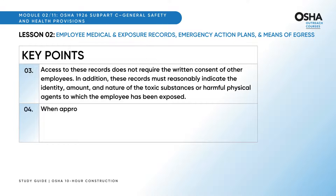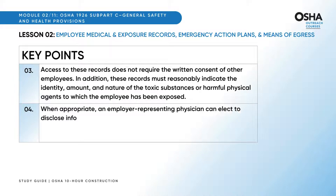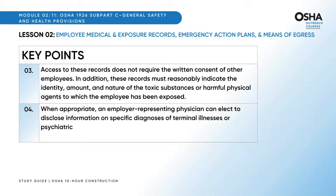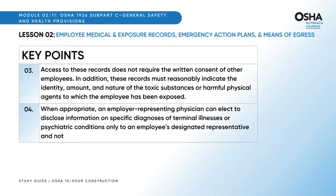Access to these records does not require the written consent of other employees. In addition, these records must reasonably indicate the identity, amount, and nature of the toxic substances or harmful physical agents to which the employee has been exposed. When appropriate, an employer's representing physician can elect to disclose information on specific diagnoses of terminal illnesses or psychiatric conditions only to an employee's designated representative and not directly to the employee.